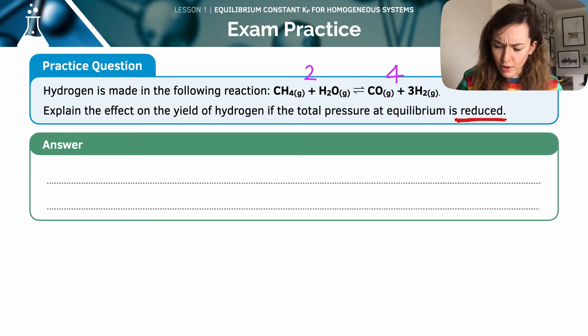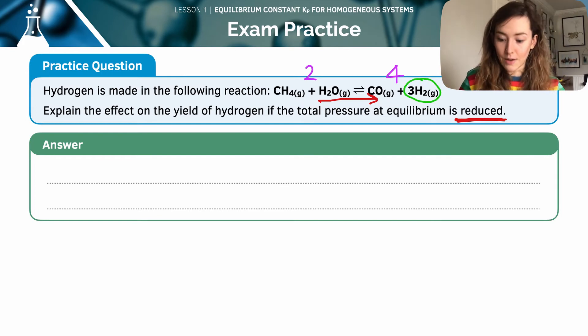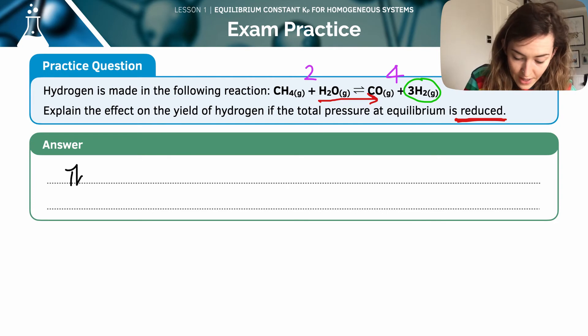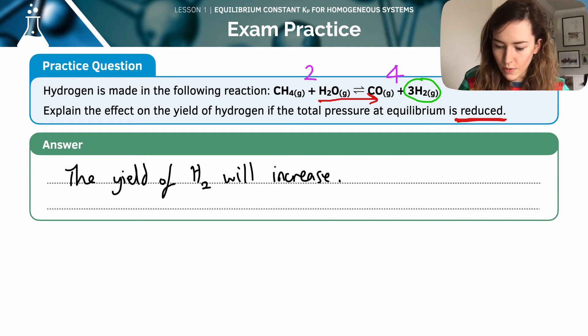We're reducing the pressure. Therefore, we're going to shift in favor of the direction that has the more gaseous moles. So we're going to shift in the forward direction here to oppose that change. Therefore, I can immediately tell that the yield of hydrogen, this here, is going to increase. I'm going to make more of it. So the yield of hydrogen will increase and then it says explain. So I need to continue there. So that'd be one mark.